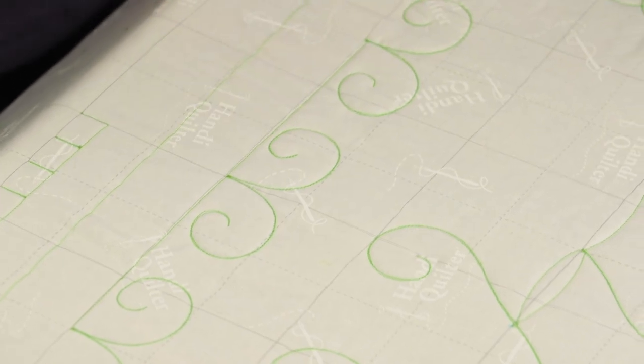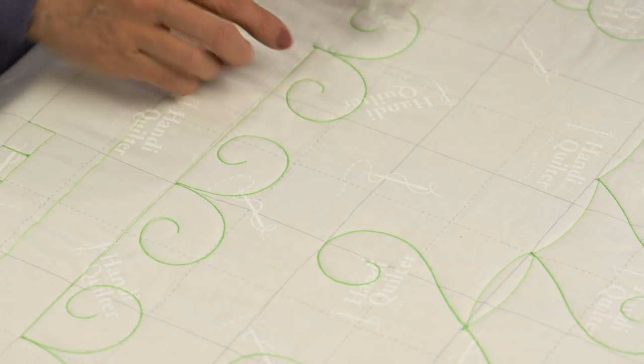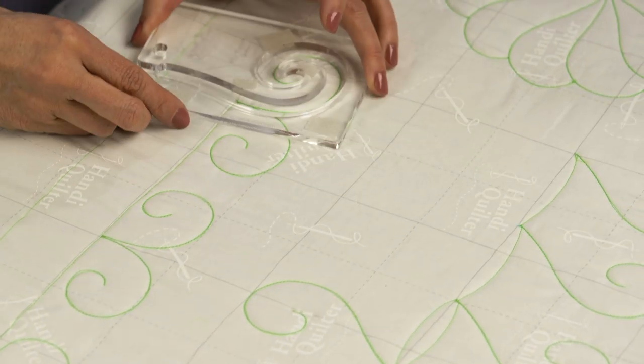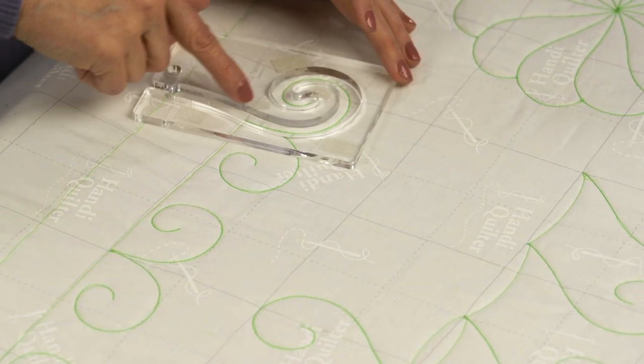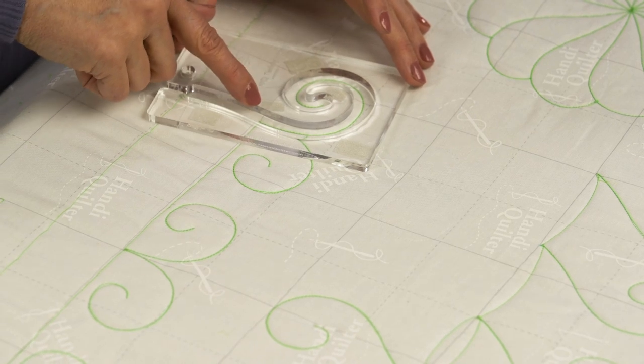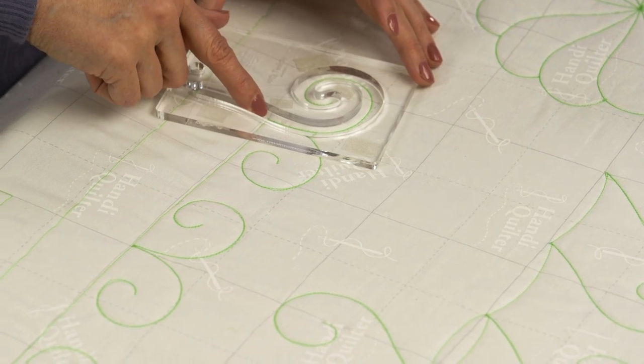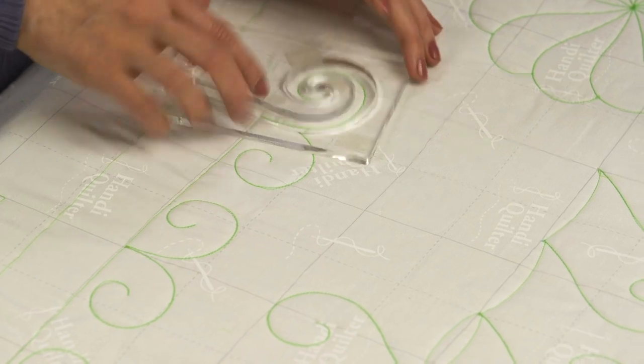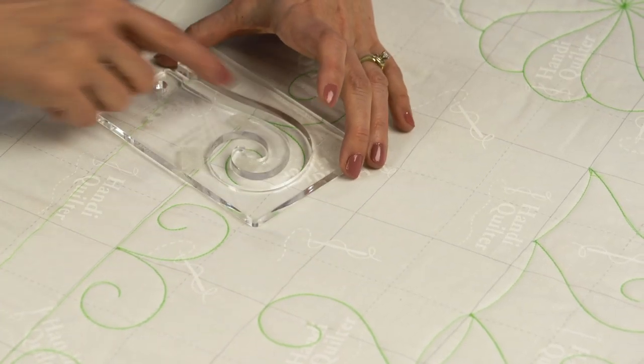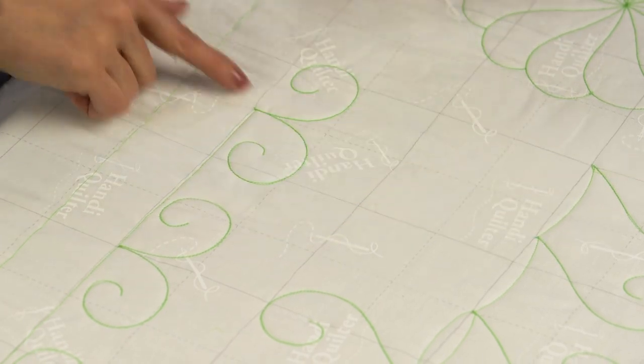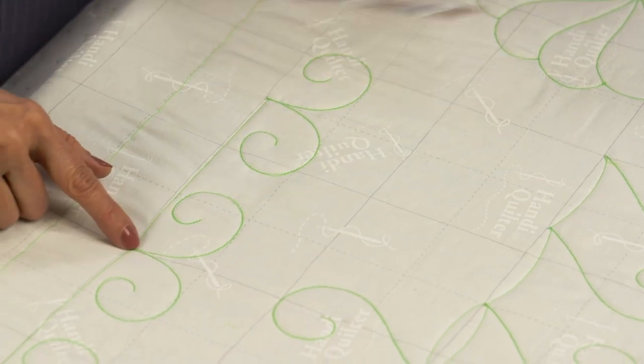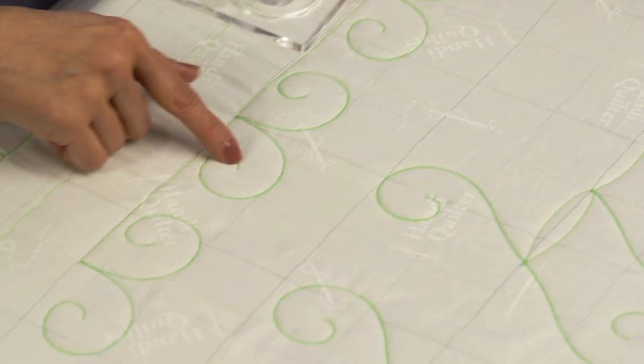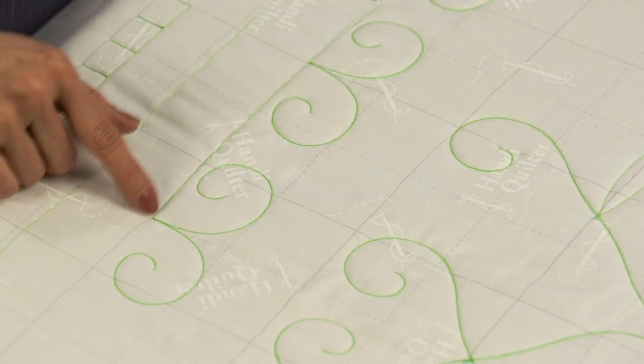One more that we want to go over. This one is only using a portion of the twirly ruler. I started and I marked my ruler with some painter's tape so I would know where to start and stop. So I just stitched part of it, stopped, flipped the ruler over again, stitched the other side, and then I traveled along until I got to this next section, and then repeated again, flipping the ruler on every other one.